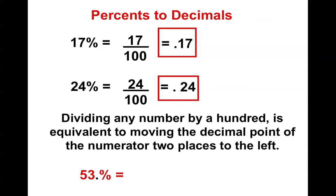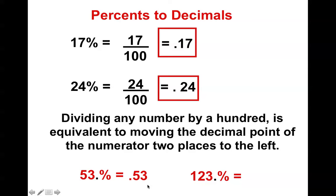You try. That gets me 0.53. Notice, dividing by 100 made it move 1, 2 spaces to the left. Can you get what this one would be? I'll give you a hint — it moves 1 and 2 spaces to the left, and you get your answer.